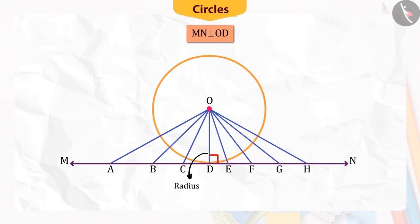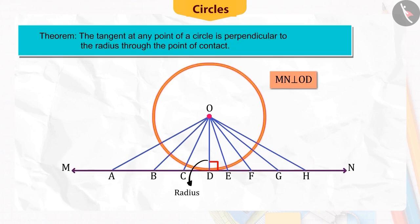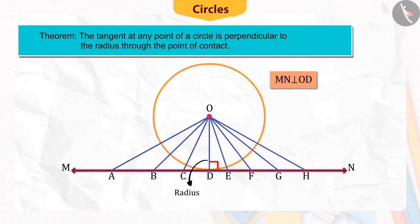Based on this activity, we can say that the tangent at any point of a circle is perpendicular to the radius through the point of contact. You can confirm this yourself by any other method.